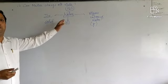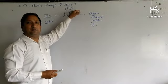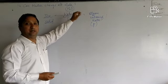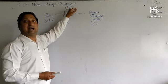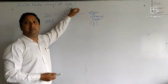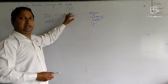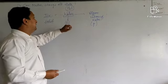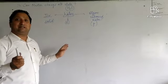You have to remember the formula H₂O. H is hydrogen and O is oxygen, so the formula of water is H₂O. Water can exist in all three states.